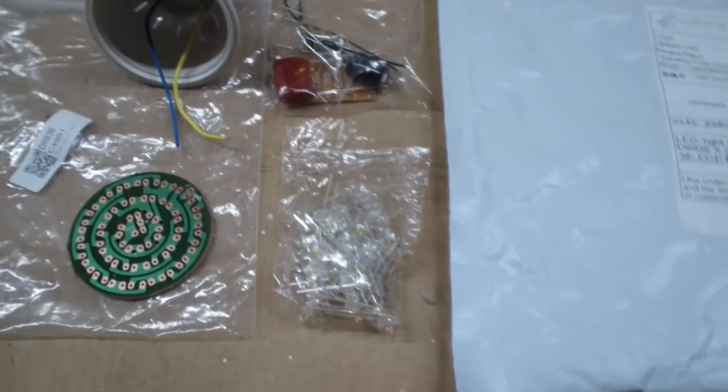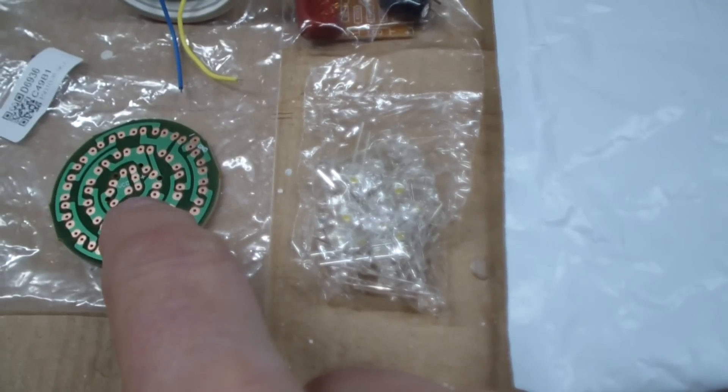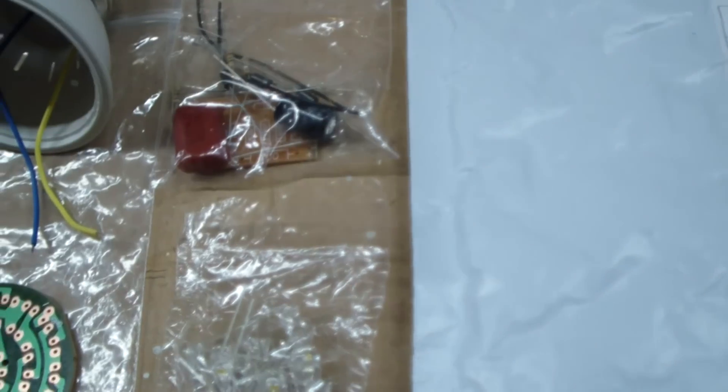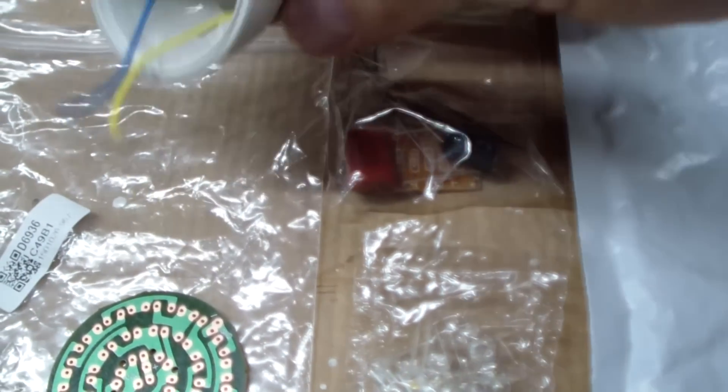Here's the kit itself. The kit seems to come with 38 LEDs, a circuit board, another circuit board, a couple of capacitors, some diodes, and some resistors, and a base unit.